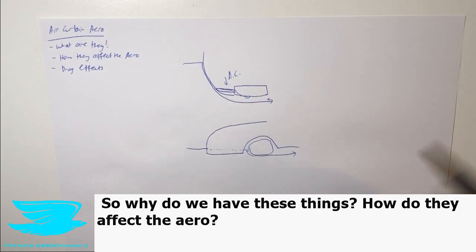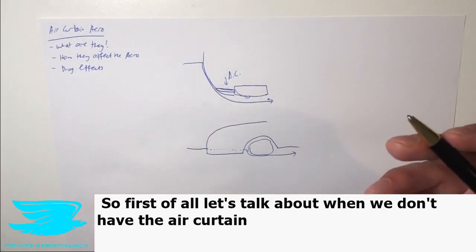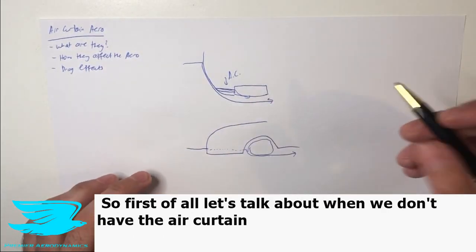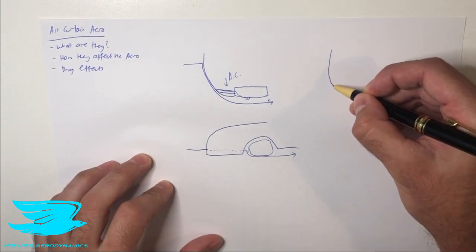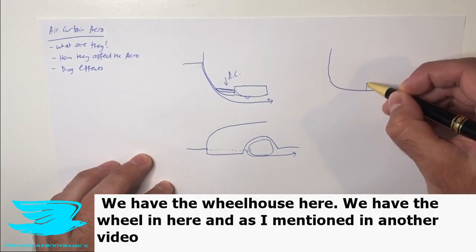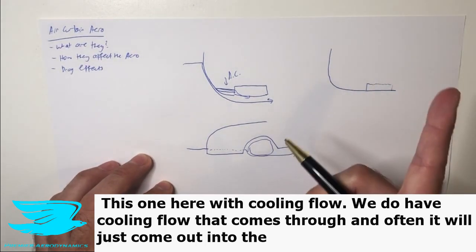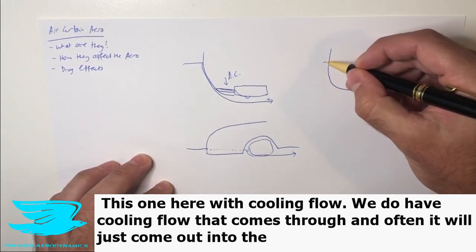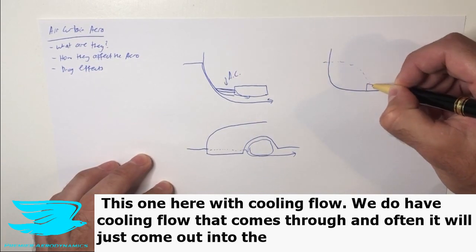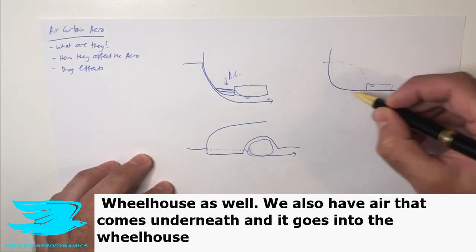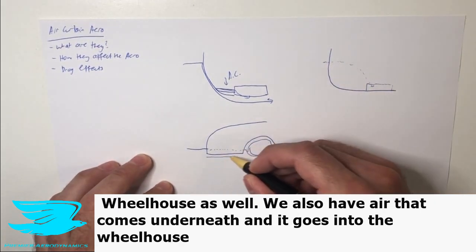So why do we have these things? How do they affect the aero? First of all, let's talk about when we don't have the air curtain. So we have the front of the car and the wheelhouse here with the wheel. As I mentioned in another video about cooling flow, we do have cooling flow that comes through and often it will jettison out into the wheelhouse as well. We also have air that comes underneath and goes into the wheelhouse.